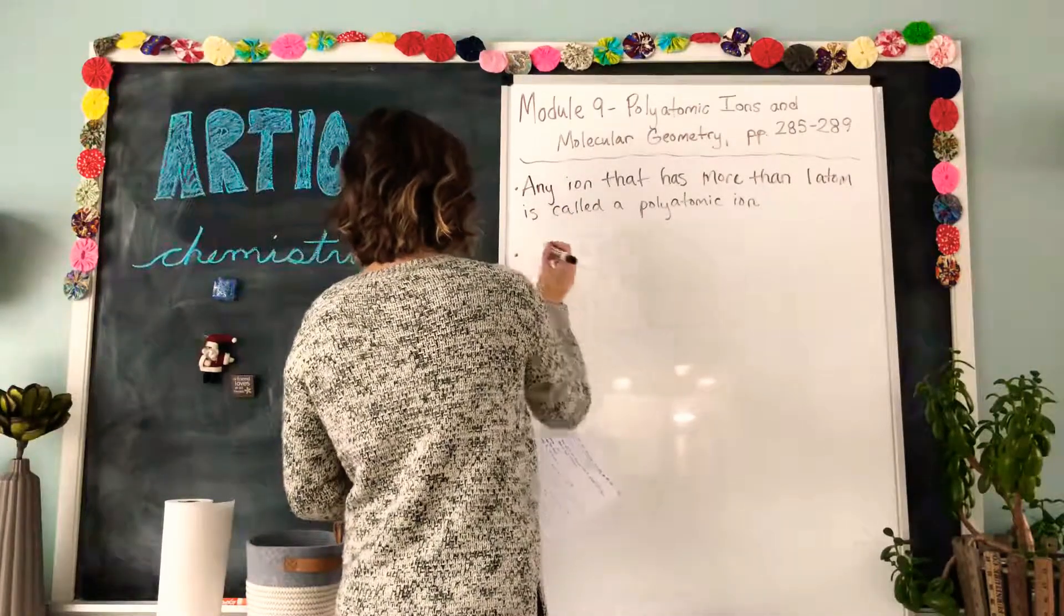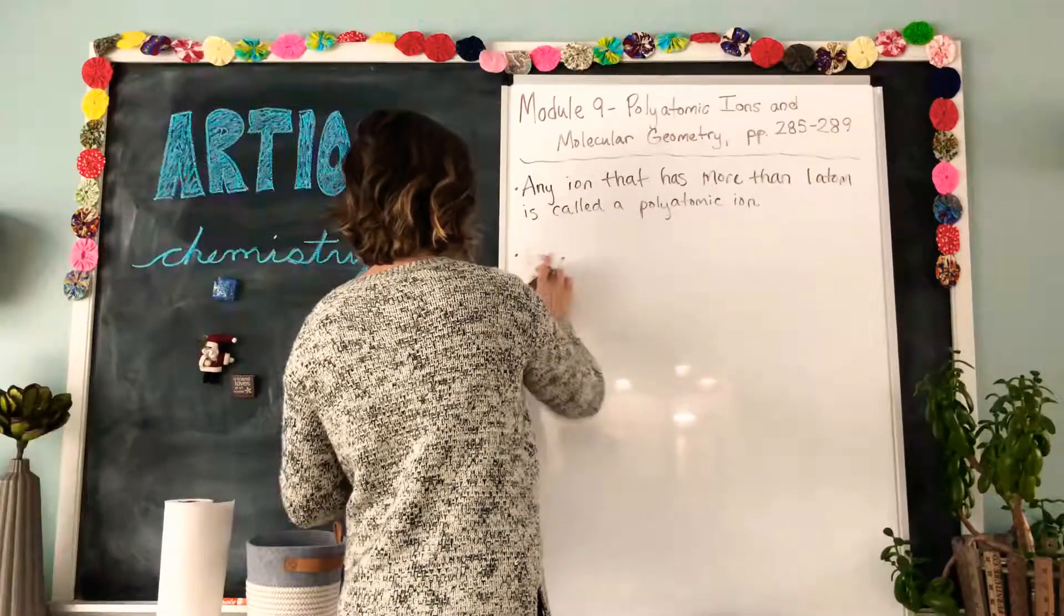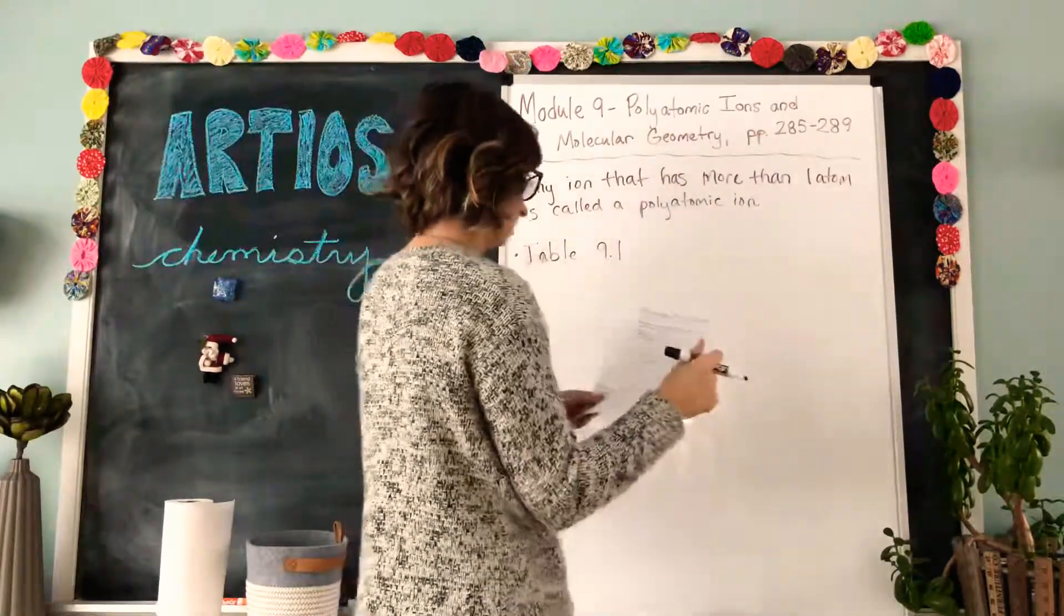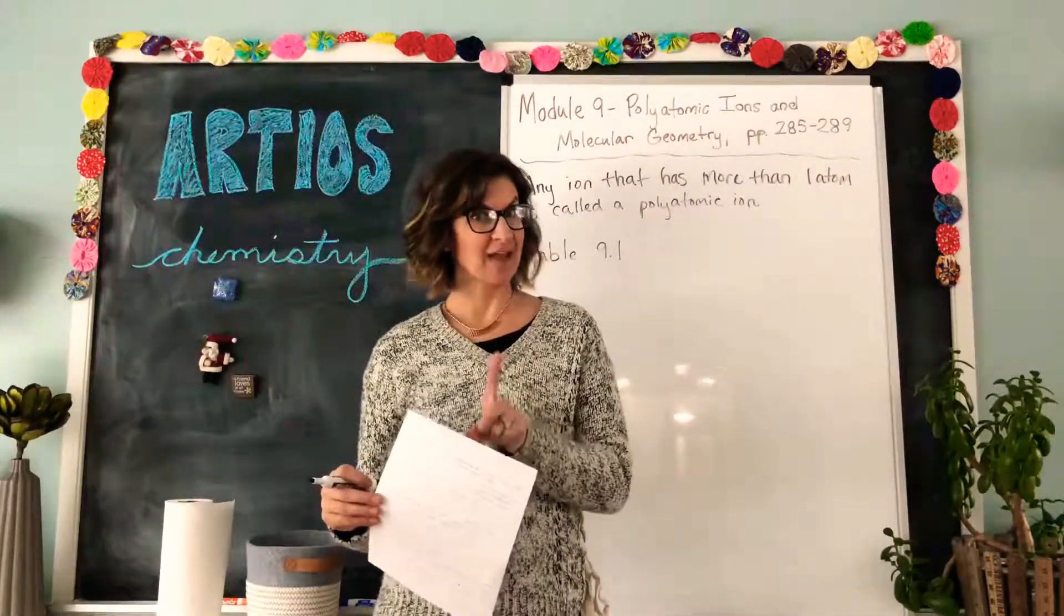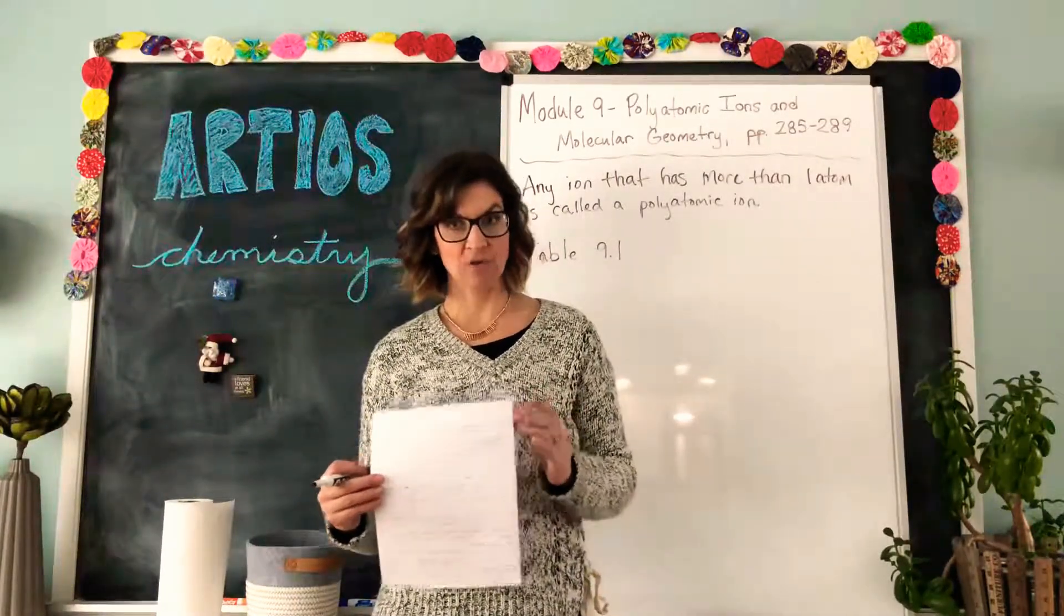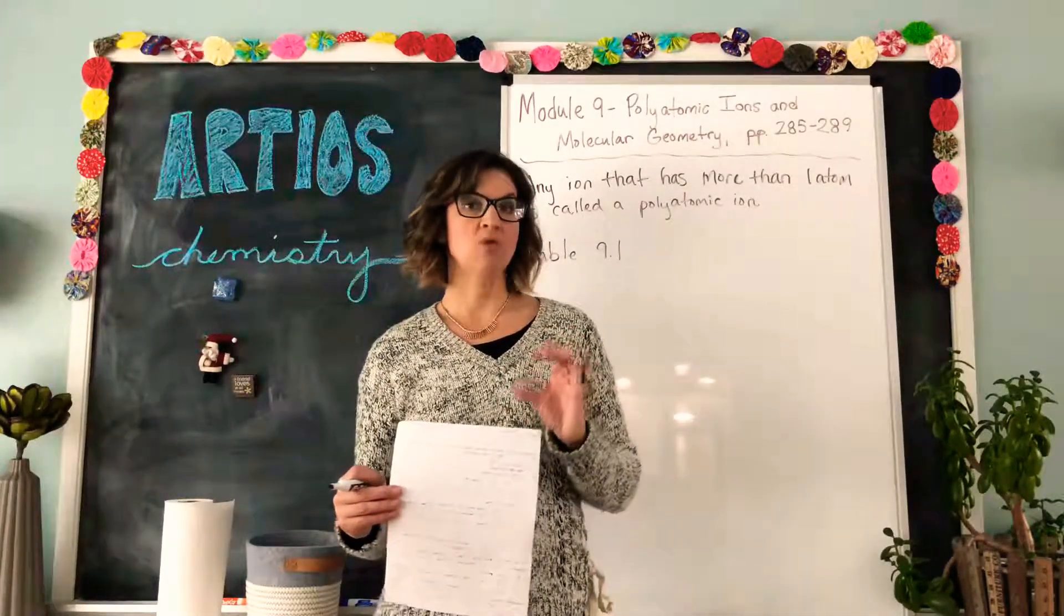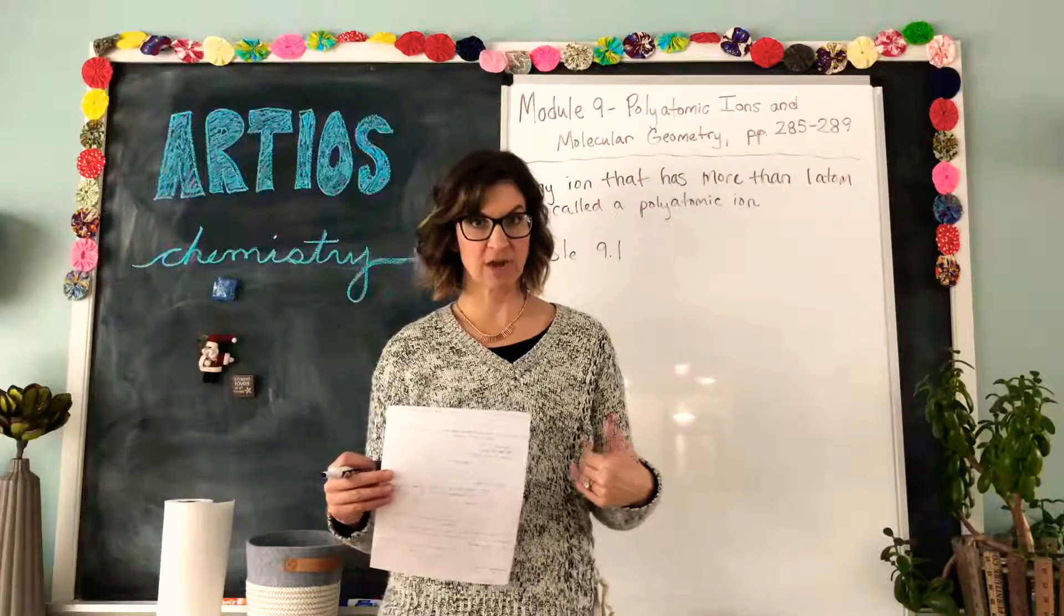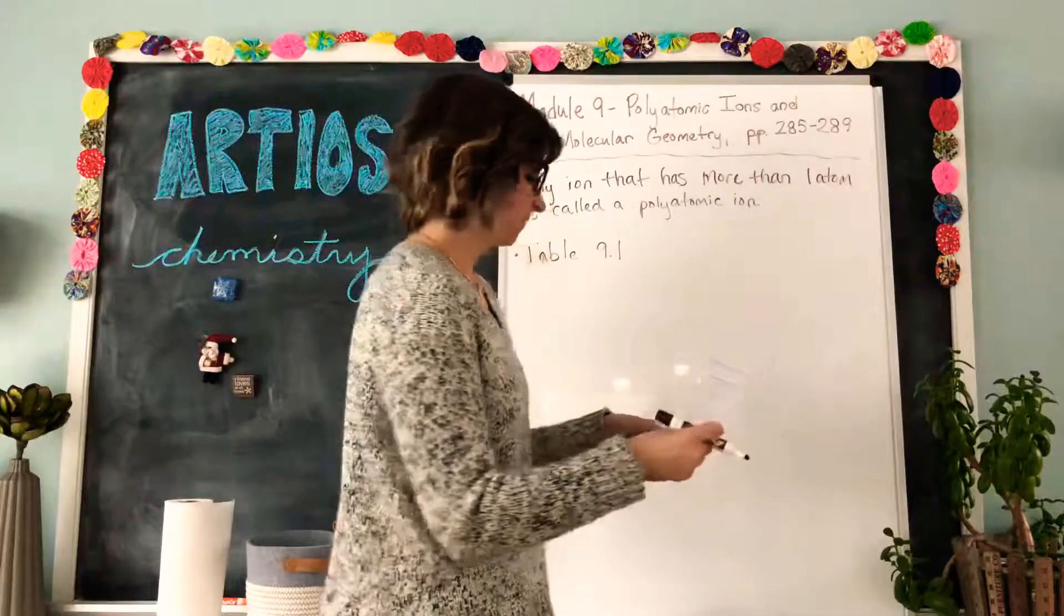And then, if you haven't already, actually we're going to write table, write into your notes that you want to learn table 9.1. The book says that you are supposed to memorize them, and some of you might have to memorize them. For my students in my class, I will allow you to write them out on a little three by five index card and use that for reference while we're studying this module. So I think that you'll probably get to know these ions as you're using your little reference card, but you will be able to use that index card on the test. So make yourself an index card of this table.